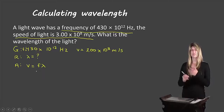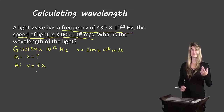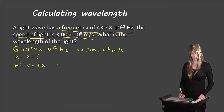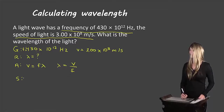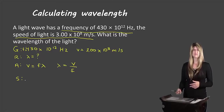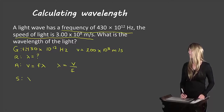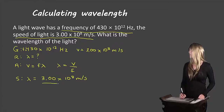We want to solve for lambda, so we need to rearrange the equation. If you're having trouble rearranging equations, please ask me in class and we'll go over those steps. Our rearranged formula is lambda equals V over F. S stands for substitution — we substitute the values in and solve. Lambda equals 3.00 times 10 to the 8 meters per second over 430 times 10 to the 12 hertz.